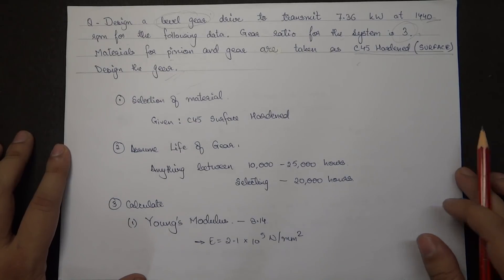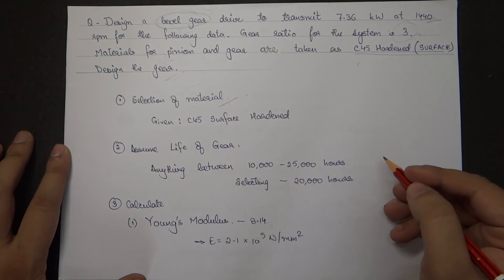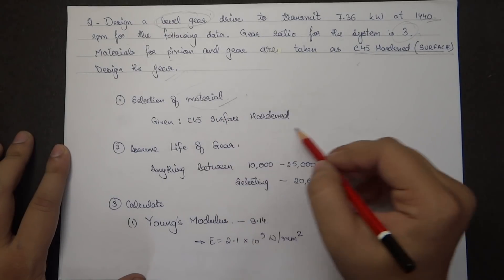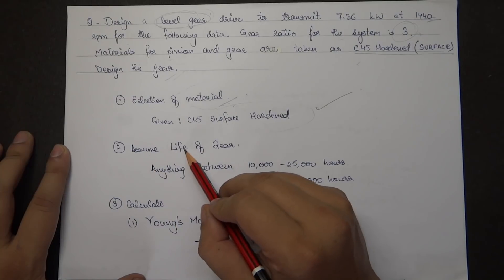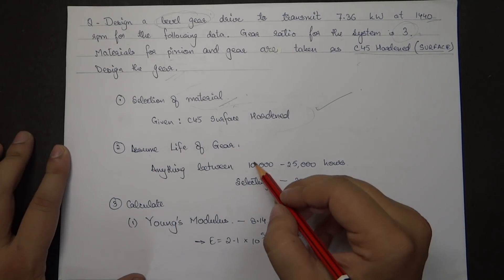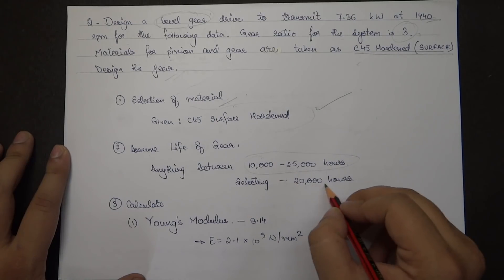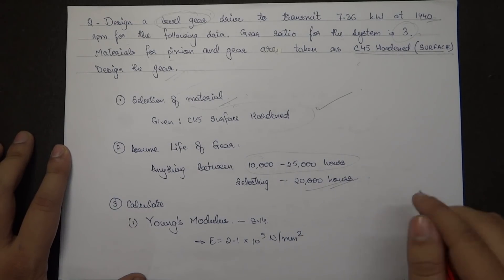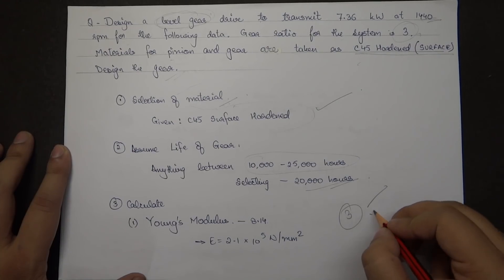The first step is selection of the material — the material is given as C45 surface hardened, so step one is complete. The second step is assumption of life of gear; we can take anything between 10,000 to 25,000 hours. I'll be selecting 20,000 hours for this question.